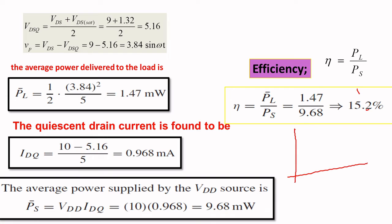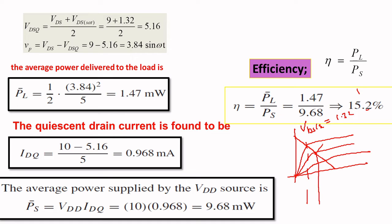Let me draw the graph. You will be having a curve like this. Here you have your VDS saturation, which you have determined as 1.32. Here you will have the quiescent point at the center, that is VDSQ. This is your maximum point, which was given as 9. So VDSQ equals (9.0 + 1.32) divided by 2, giving you 5.16. This is the center point, 5.16.